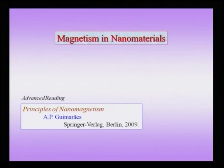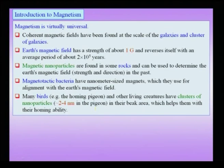The next topic we take up is magnetism in nanomaterials. Students interested in learning more advanced topics can consult the book 'Principles of Nanomagnetism,' which is compact but gives detailed information. As before, we will cover some basics of magnetism first, followed by changes that occur at the nano scale, including very interesting properties like super paramagnetism and giant ferromagnetism.